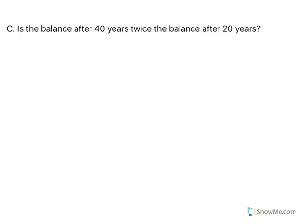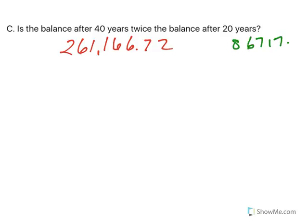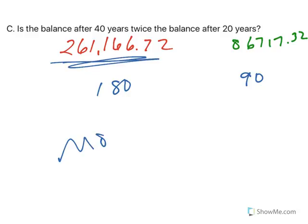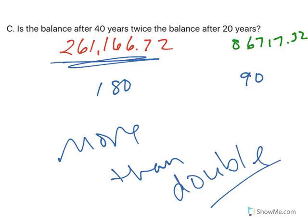Is the balance after 40 years — which was $261,166.72 — twice the amount after 20 years, which was $86,717.32? If you say the 20-year balance is close to $90,000 and you double that, that's $180,000. You can clearly see $261,000 is way more than $180,000. So it's more than double — it's more than twice.